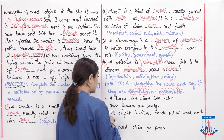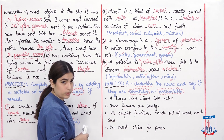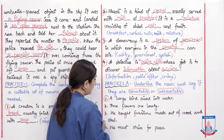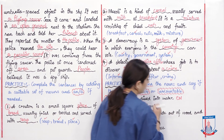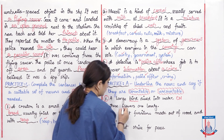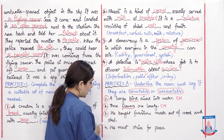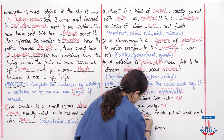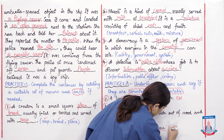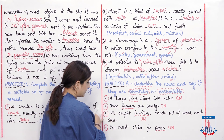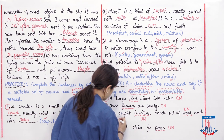The last exercise is Practice A: underline the nouns and say if they are countable or uncountable. Number one: 'A large bird dived into water' — 'bird' is countable (CN). Number two: 'These flowers are lovely' — 'flowers' is countable (CN). Number three: 'We bought furniture made out of wood and steel' — 'furniture,' 'wood,' and 'steel' are all uncountable nouns (UN). Number four: 'We must strive for peace' — 'peace' is uncountable.